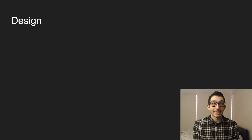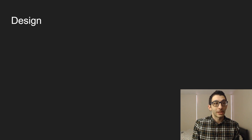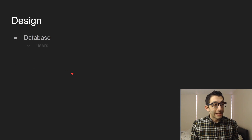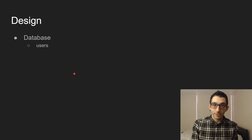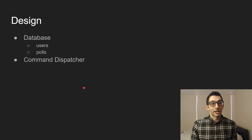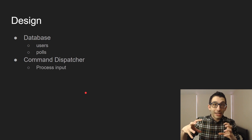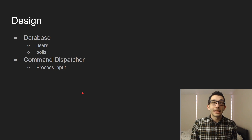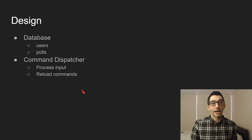I don't want to spend a long time focusing on the design because I didn't get to spend a long time on it during the actual episodes. There were several areas of design. The database is pretty simple — there's a users table where we keep track of perk information, who's subscribed, and we also keep track of polling: the polls, the options, and then the votes on those options. The command dispatcher handles processing user input and routing it to the correct command, with the ability to reload commands so you don't need to restart the entire bot.